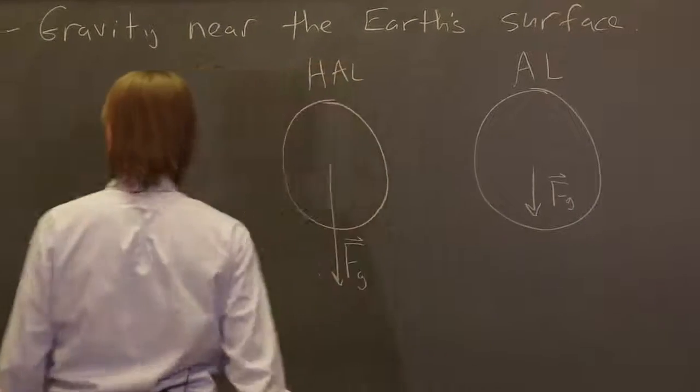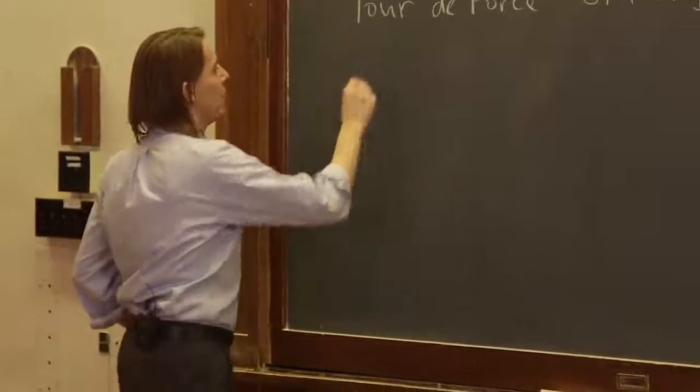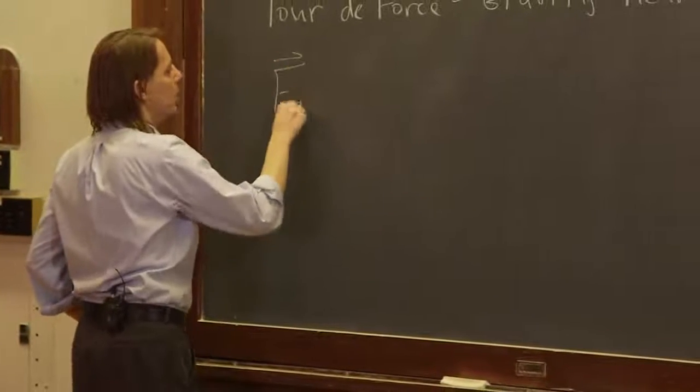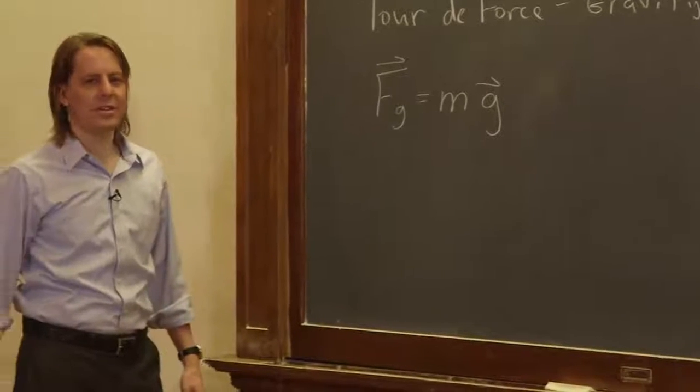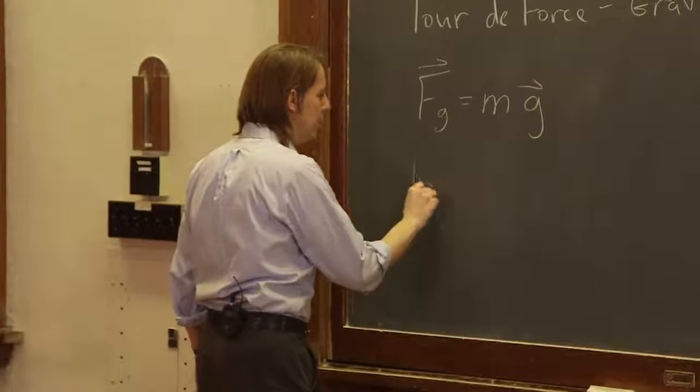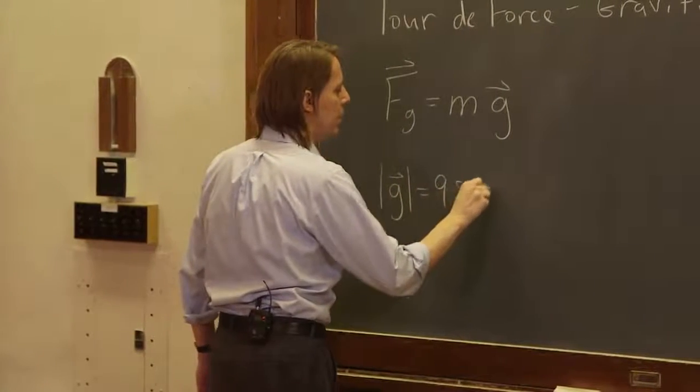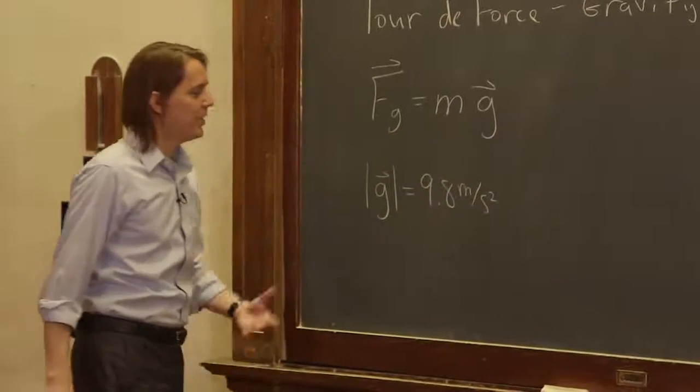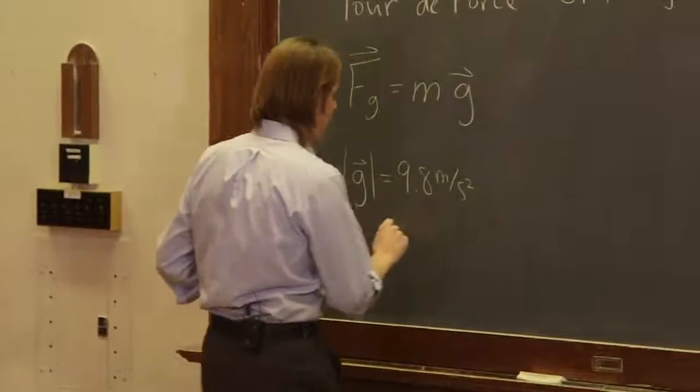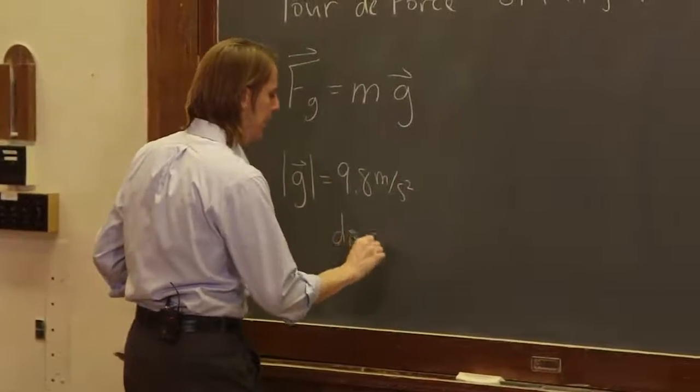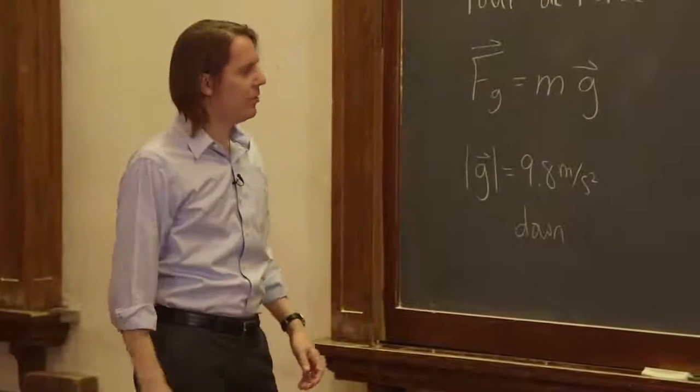To calculate the gravitational force, Fg is the mass times the vector constant g. The magnitude of little g is 9.8 meters per second squared. It is basically the acceleration that we observed when we were doing kinematics, and its direction is down, because down generally for us means towards the surface of the earth.